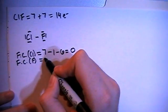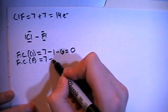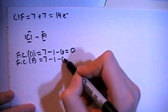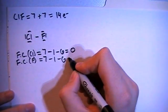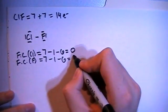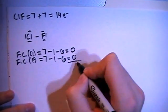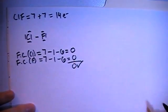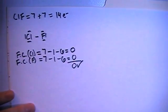And then the formal charge on the fluorine is going to look very similar. It has 7 valence brought in minus the 1 single bond minus the 6 nonbonding electrons, also a formal charge of 0. Add those up and get your overall charge of 0 which is what we need because this is not charged.